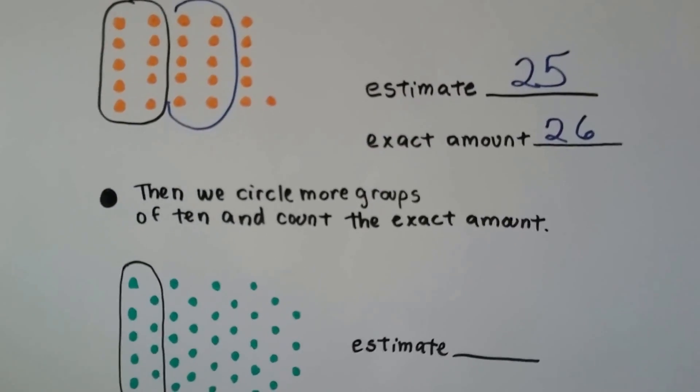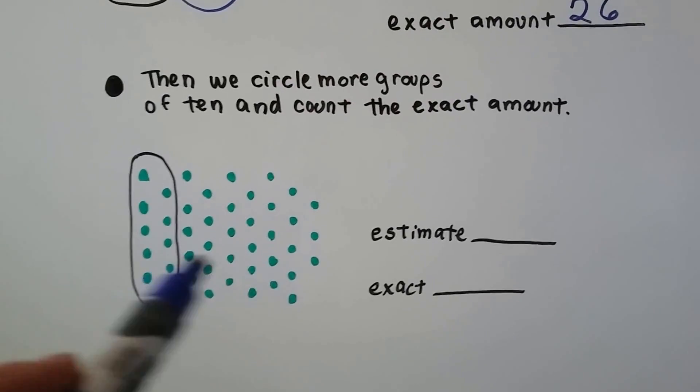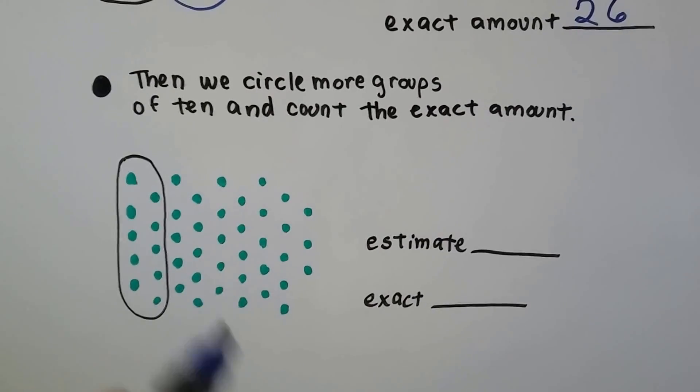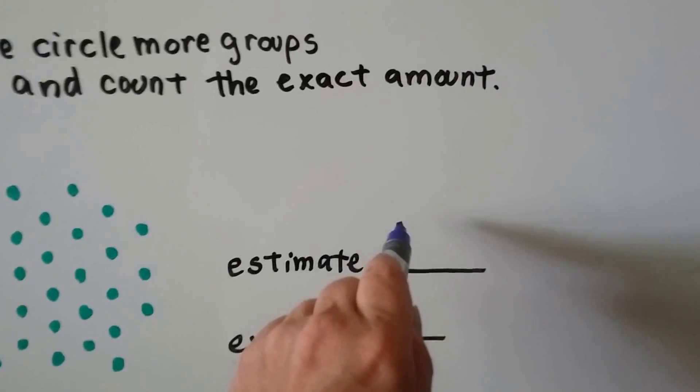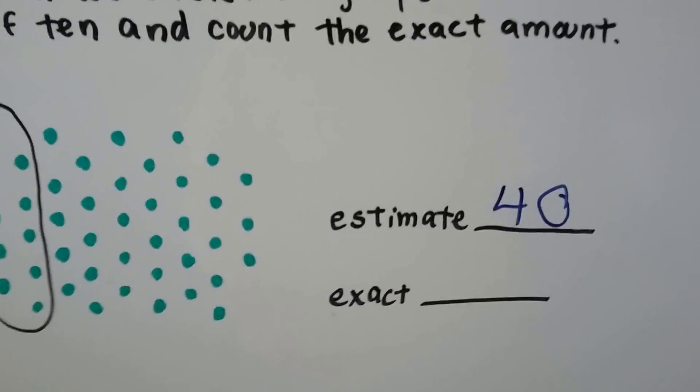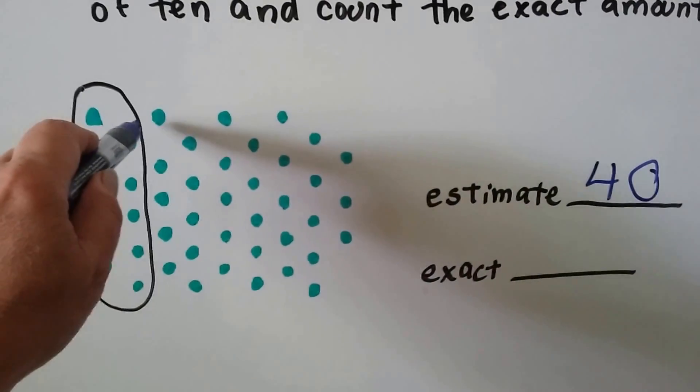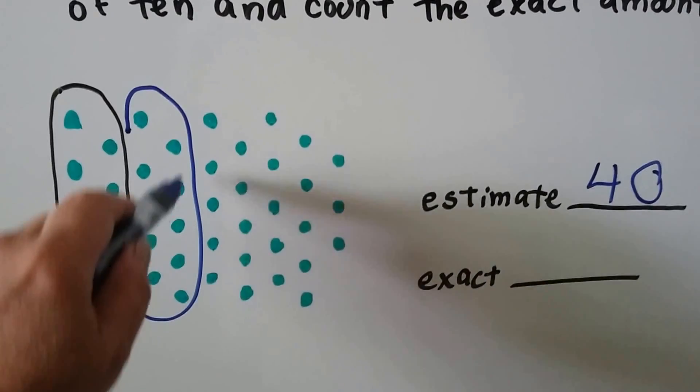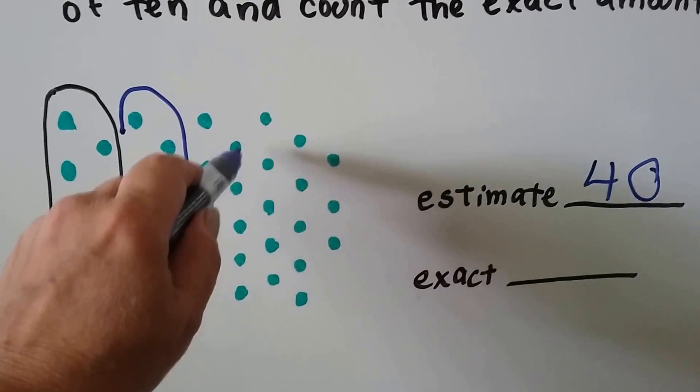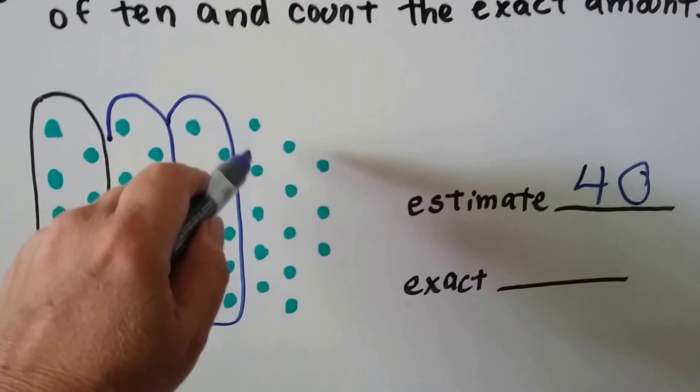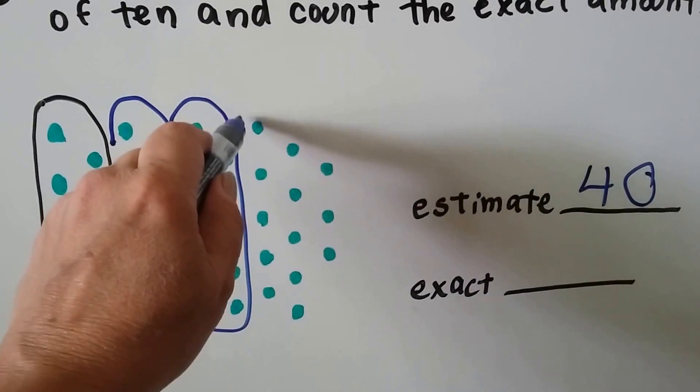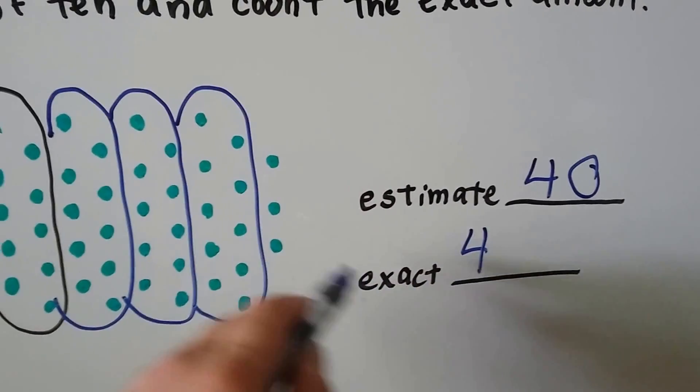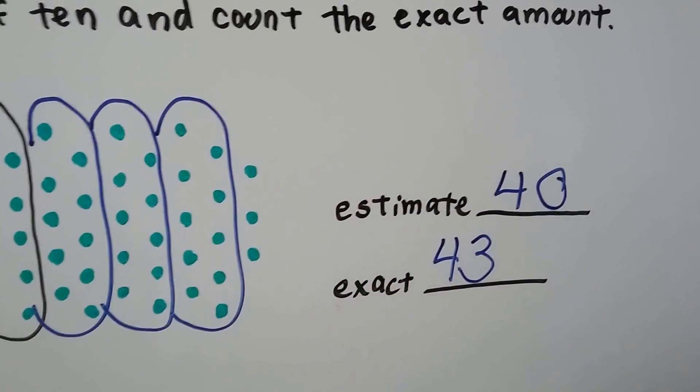We circle more groups of ten and count the exact amount. So circle one group of ten and then give a good smart guess to how many you think might be there. If that's ten, then maybe there's about 40 here. That would be my guess, so I'm going to estimate about 40. Now let's circle the groups of ten to find out how many there really are. So that's one ten, here's another ten, there's another ten. So we have four tens and one, two, three ones. So it was exactly 43.